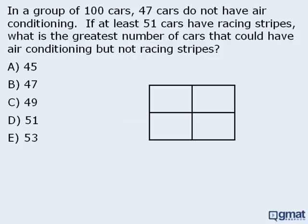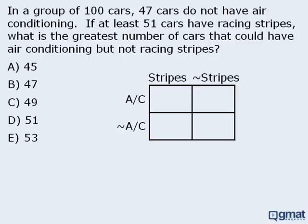Let's reserve the top row for cars with air conditioning, and reserve the bottom row for cars without air conditioning. Next, we'll reserve the left-hand column for cars with racing stripes, and reserve the right-hand column for cars without racing stripes.